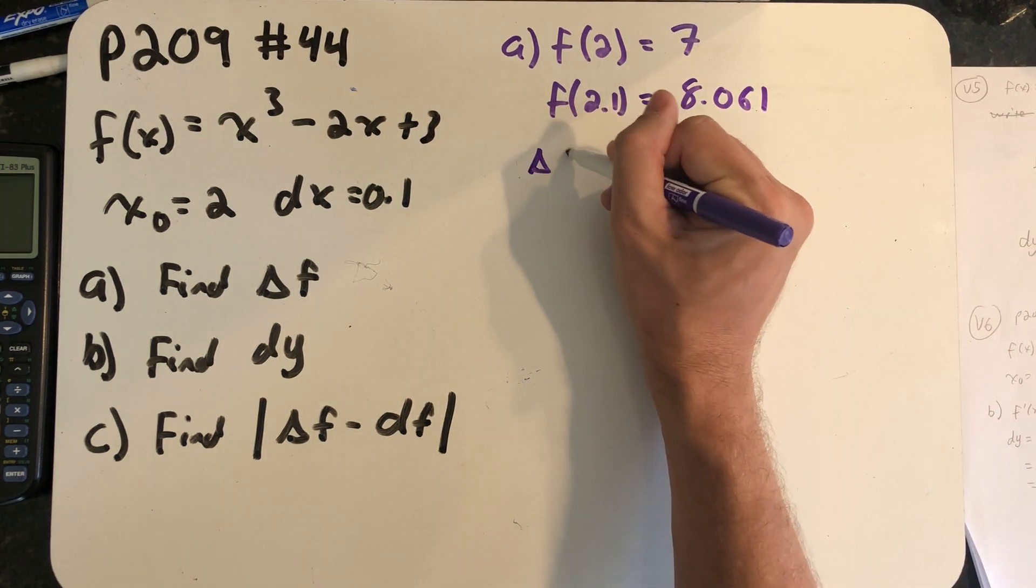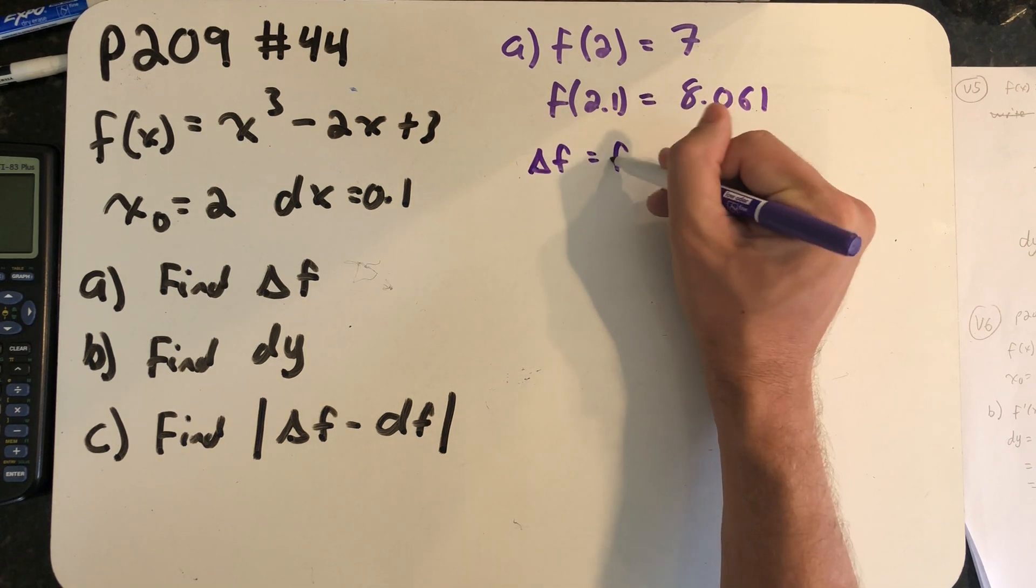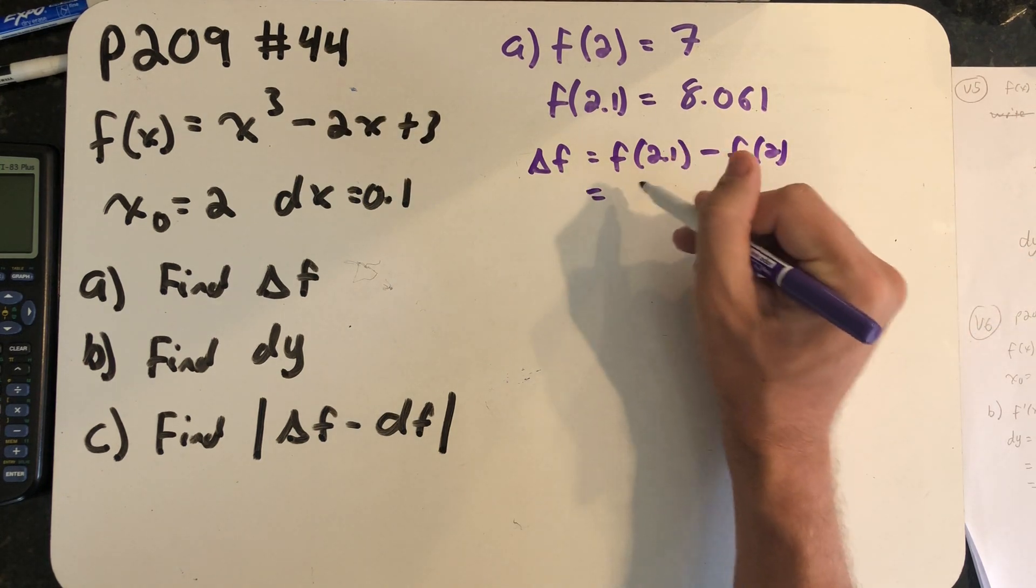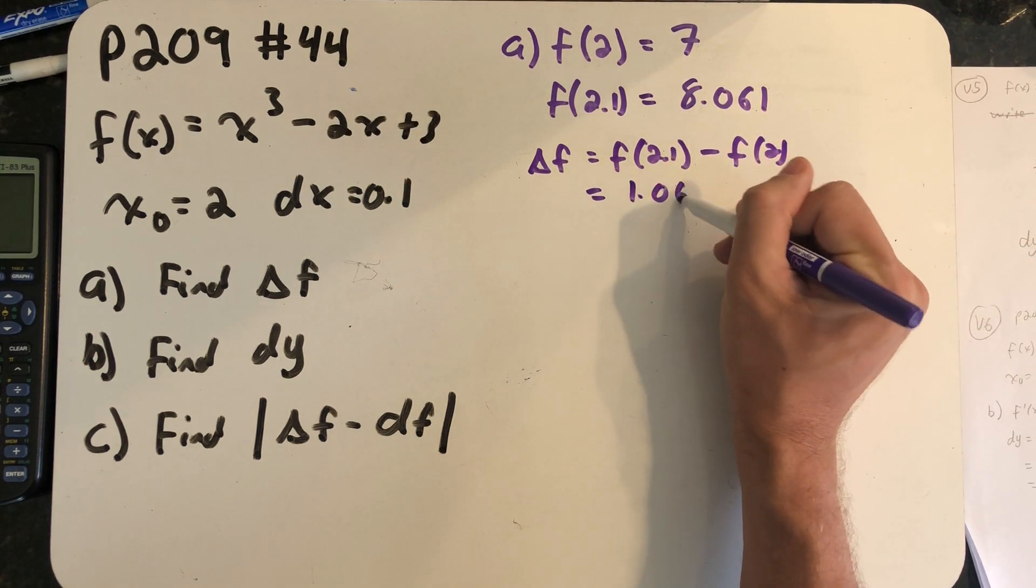So Δf, which is the second y value minus the first y value, is 1.061.